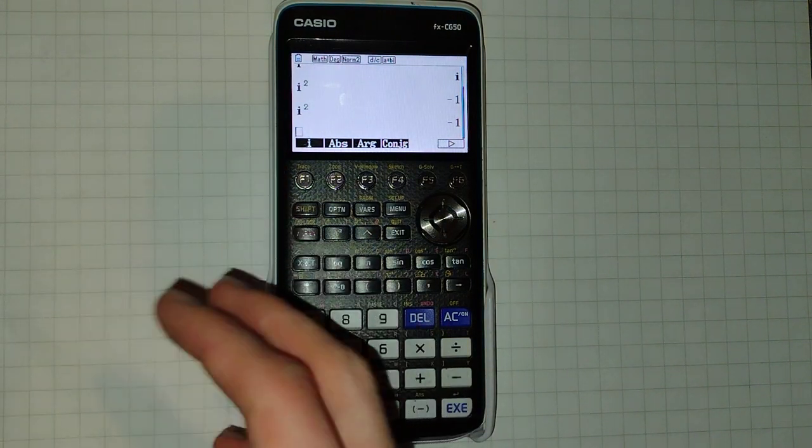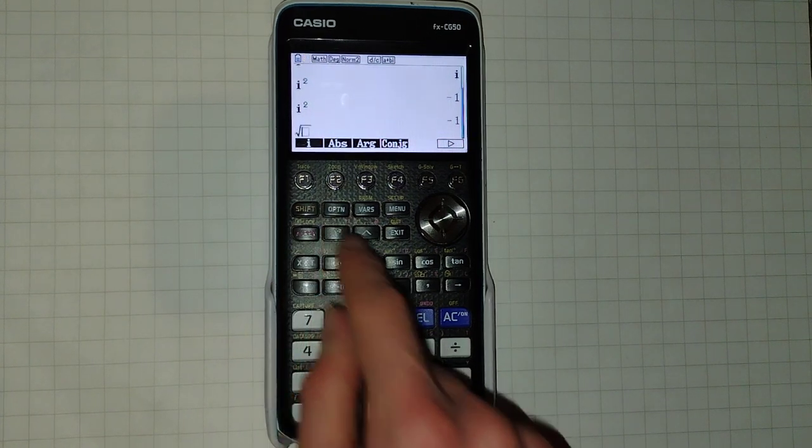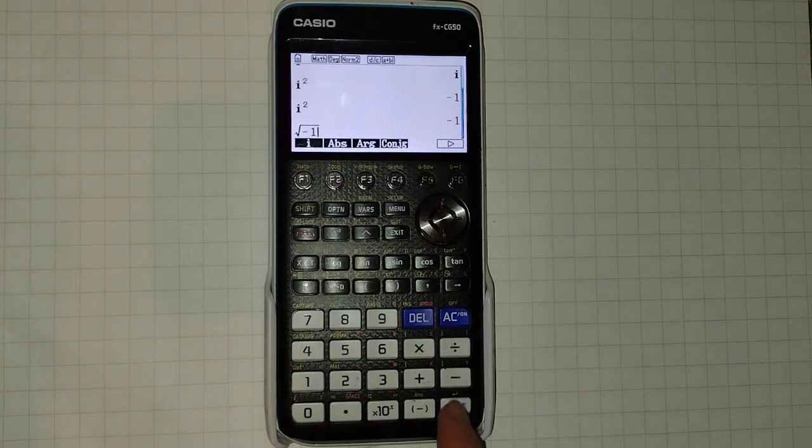Now actually, you can use I even when you're in real mode, but it's just doing stuff like square root of negative 1 that will give you an error.